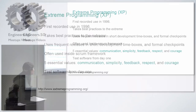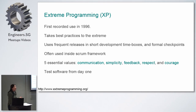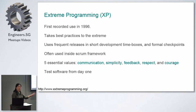Let's look at what extreme programming is all about. The first recorded use is in 1996 — before the Agile Manifesto came about. It's called 'extreme' because it takes best practices to the extreme. It uses frequent releases in short development time-boxes with formal checkpoint meetings, and is often used inside the Scrum framework.